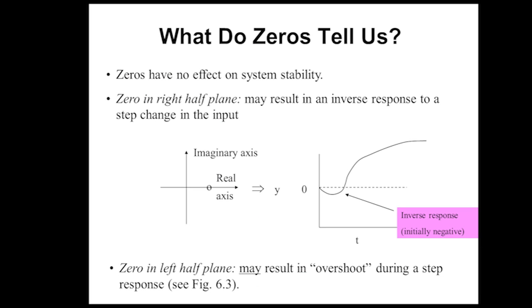Zeros have no effect on system stability, so you can have zeros in the right-hand plane and the system will still be stable if all the poles are in the left-hand plane. A zero in the right-hand plane can also sometimes produce something called an inverse response.